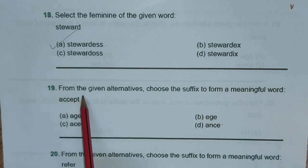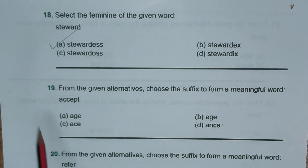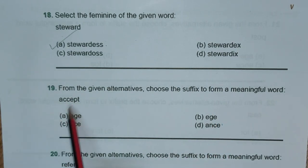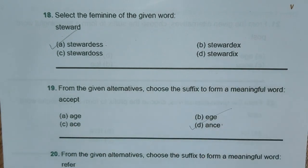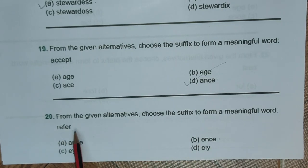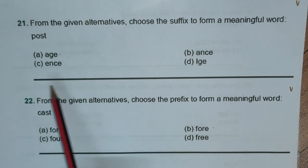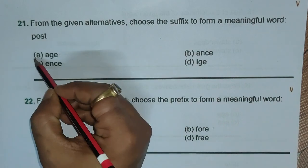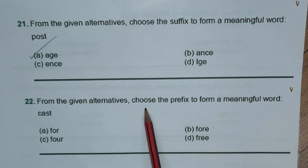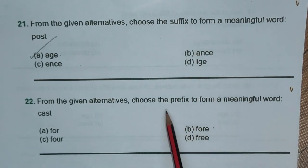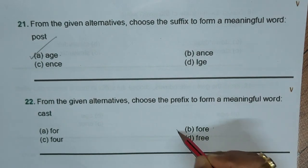From the given alternatives, choose the suffix to form a given word. Question nineteen: the base word is 'accept' and the options are A -is, B -edge, C -is, and D -ance. We know 'acceptance' is a word, hence option D is the right answer. Question twenty: again suffix for 'refer' — options are A -ance, B -ence, C -a, D -i — correct answer is B -ence, since 'reference' is the word. Question twenty-one: suffix for 'post' — options are A -age, B -h, C -ends, D -ledge — correct answer is A -age, since 'postage' is the word. Question twenty-two: now we are looking for a prefix for 'cast' — options are A fore, B for, C four, D free — correct answer is A 'fore,' and the word is 'forecast.'